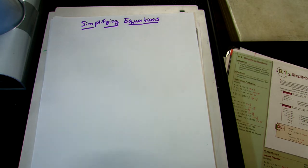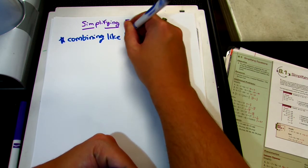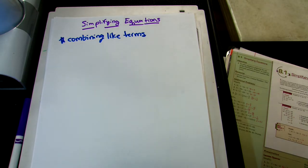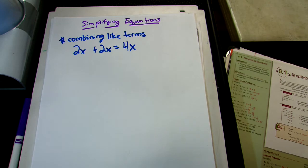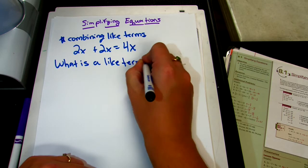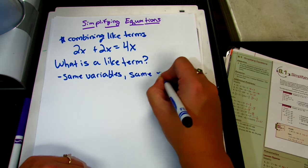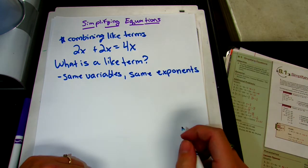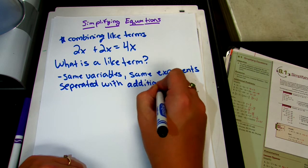So the first thing I want to talk about is combining like terms. When we learned about this, I told y'all to think about apples to apples — 2 apples plus 2 apples is 4 apples, just like 2x plus 2x is equal to 4x. Now, when we are talking about equations and expressions, we need to look for like terms. A like term has to have the same variables and the same exponents on those variables, and they're separated with addition and subtraction.